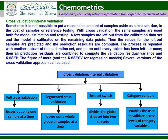In full cross validation, only one sample is left out at a time. Segmented cross validation leaves out a whole group of samples at a time. Test set switch cross validation divides the global dataset into two subsets. Category variable cross validation enables the user to validate across levels of category variables.